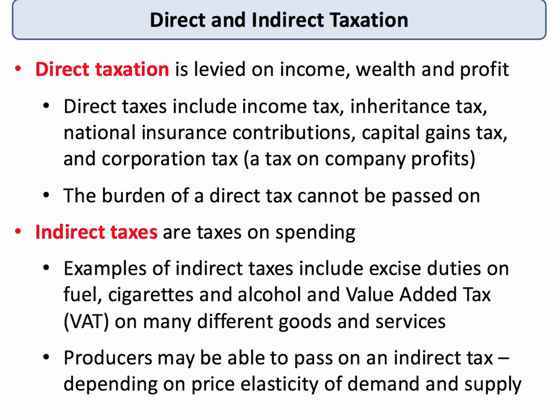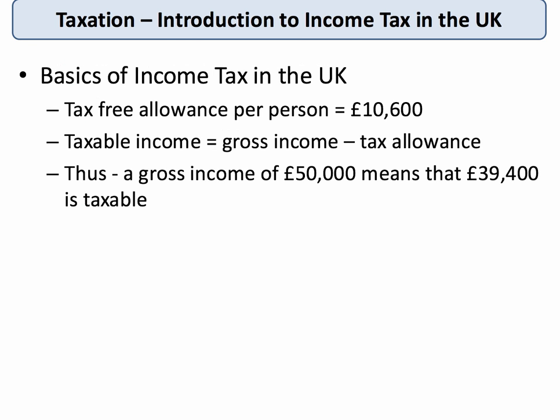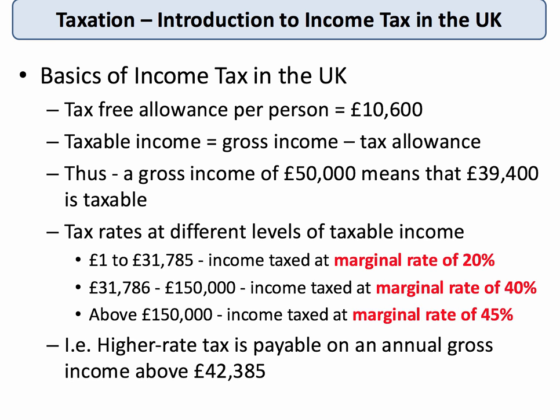That depends on the price elasticity of demand and also the price elasticity of supply. Looking at income tax in the UK: everybody has a tax-free allowance of around ten thousand six hundred pounds. Your taxable income is your gross income minus your annual tax allowance, so if my gross income is fifty thousand pounds per year, of that, thirty-nine thousand four hundred is taxable.